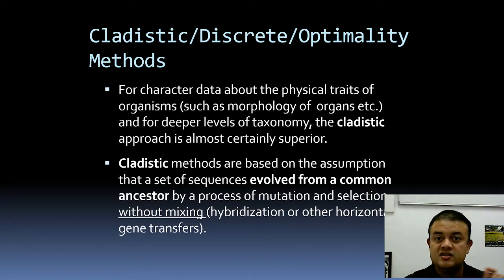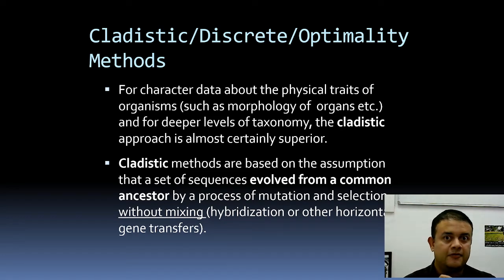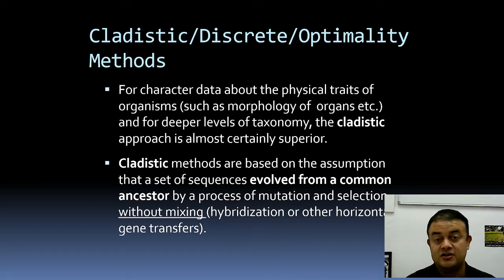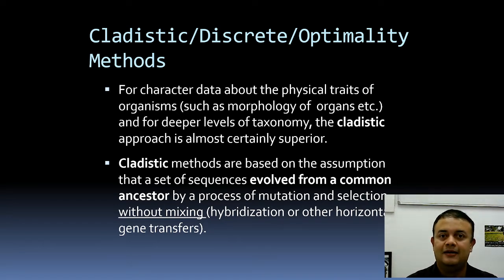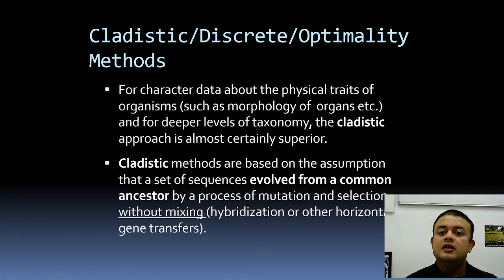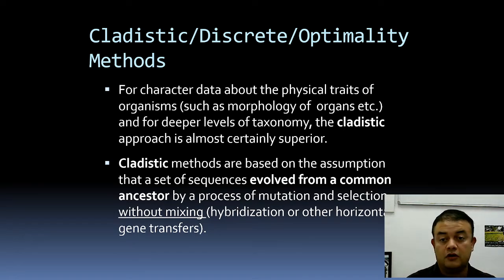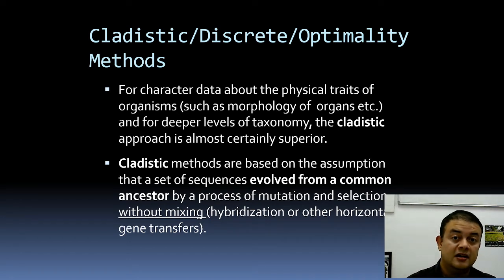We are not looking at a distance matrix — there is no distance matrix here. We generate multiple trees, millions or even billions of trees if you have a large dataset, and out of these we choose just one best tree, which is essentially a model. For character data about physical traits of organisms — morphology of organs — and for deeper levels of taxonomy, the cladistic approach is almost always superior compared with the distance method.